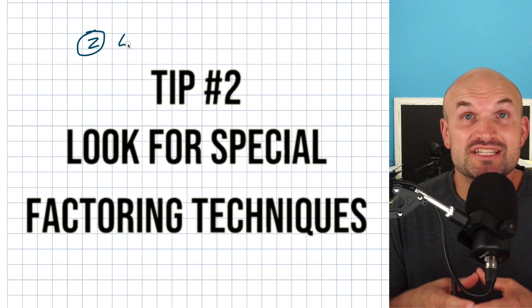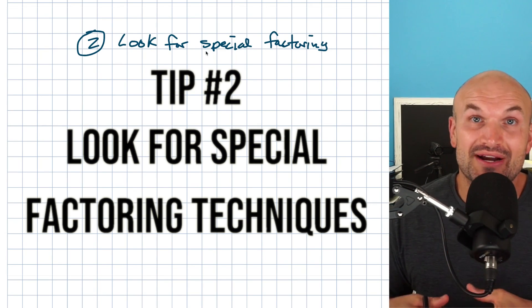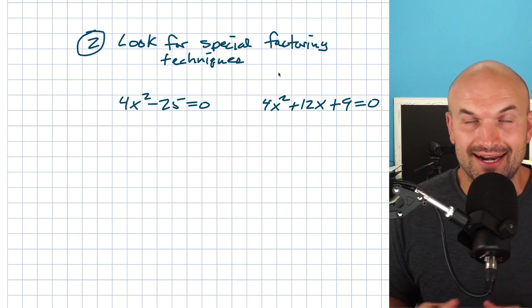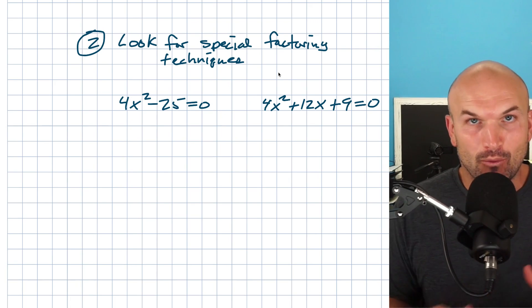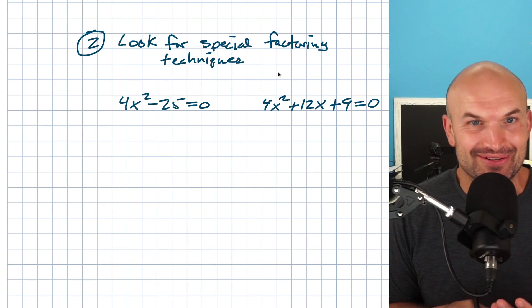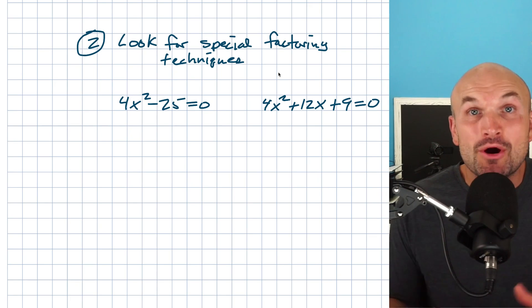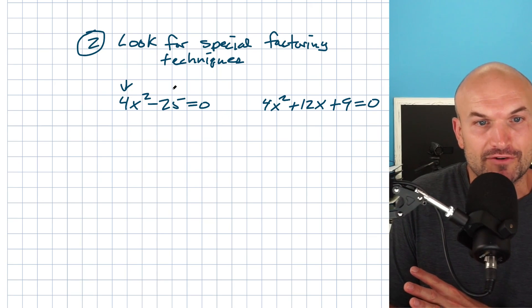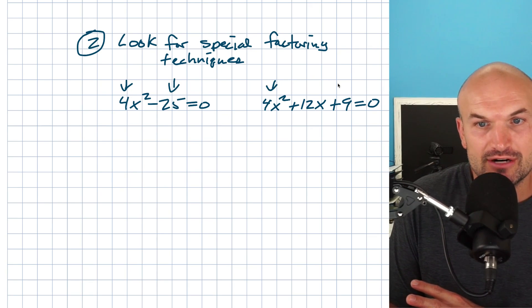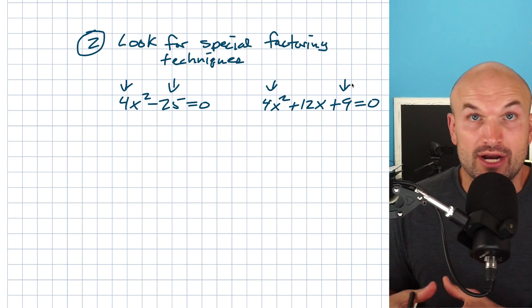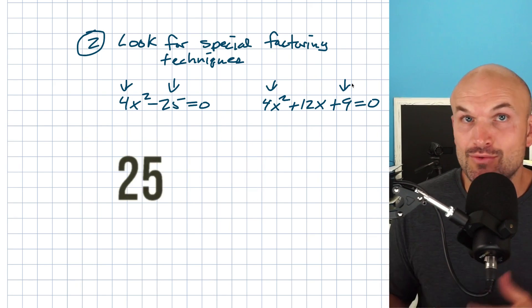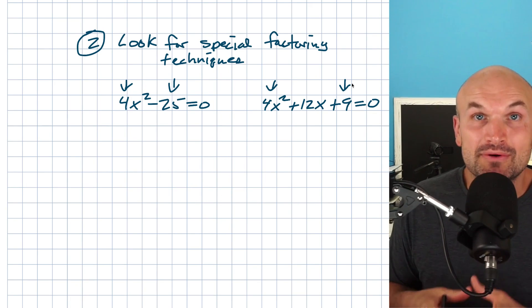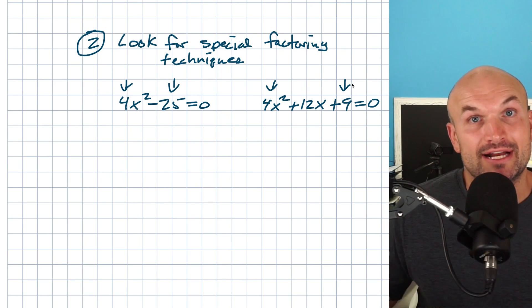Tip number two is to look for your special factoring techniques, such as the difference of two squares or perfect square trinomials. In these two examples we have a coefficient of four in front of the x squared. A lot of students see a number in front of x and jump straight to the quadratic formula, but I don't want you to do that. All you need to do is look at the first term and the last term. If both the first and last terms are perfect square numbers — like 4, 9, 16, 25, 36, 49, 64, 81, 100 — then it's possible you can factor using the difference of two squares or as a binomial squared.